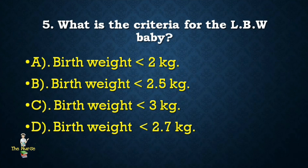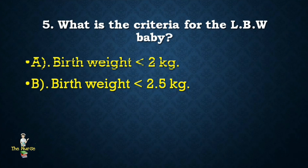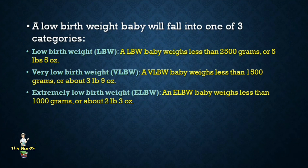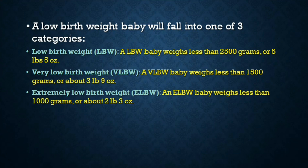Next question: What is the criteria for low birth weight baby? Options: less than 2 kg, less than 2.5 kg, less than 3 kg, less than 2.7 kg. Correct answer is birth weight less than 2.5 kg. A low birth weight baby weighs less than 2.5 kg or 2500 grams. A very low birth weight baby weighs less than 1500 grams, and an extremely low birth weight baby weighs less than 1000 grams.